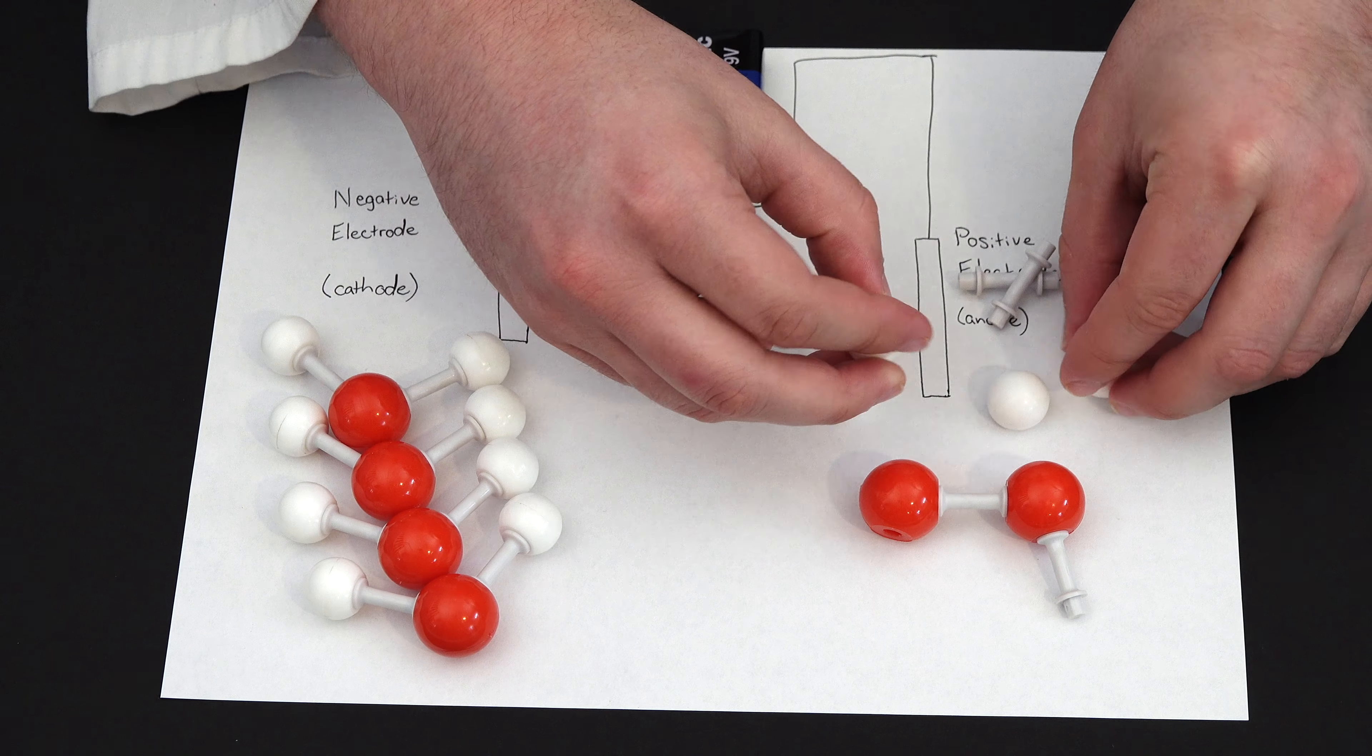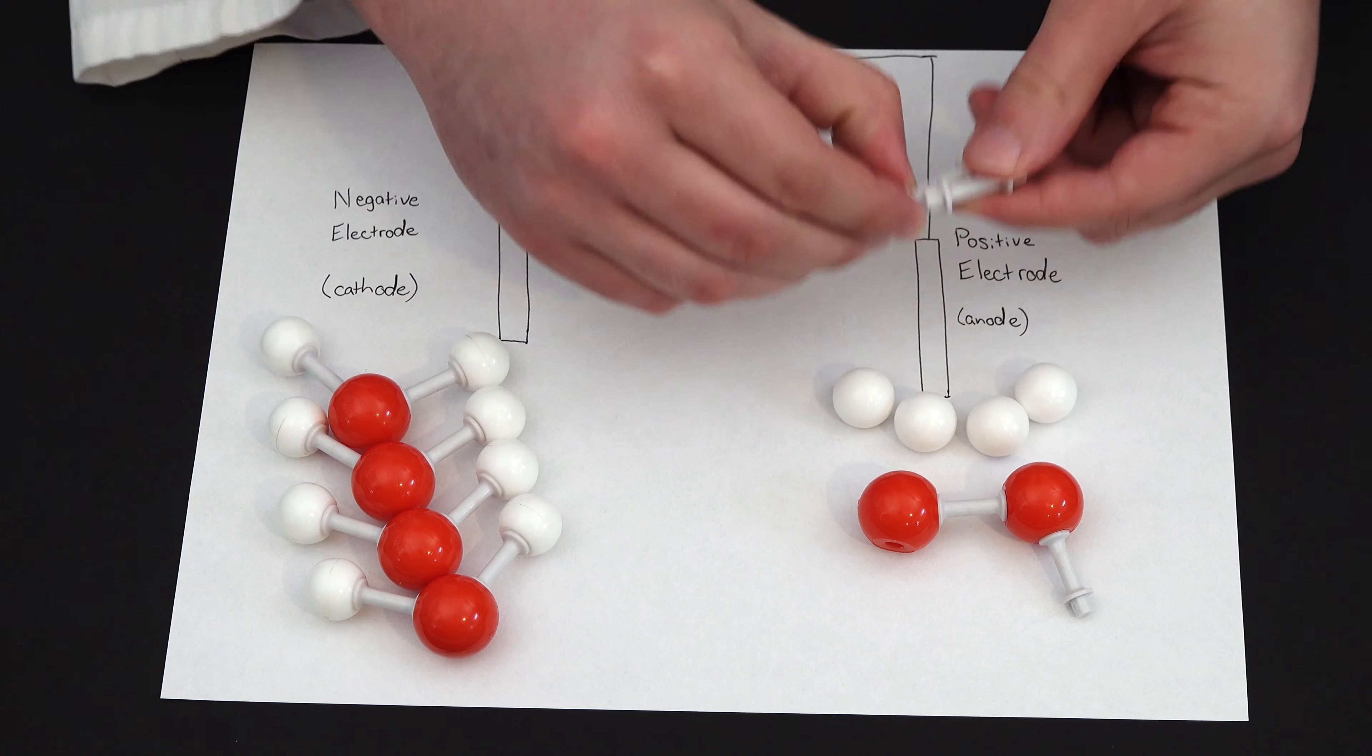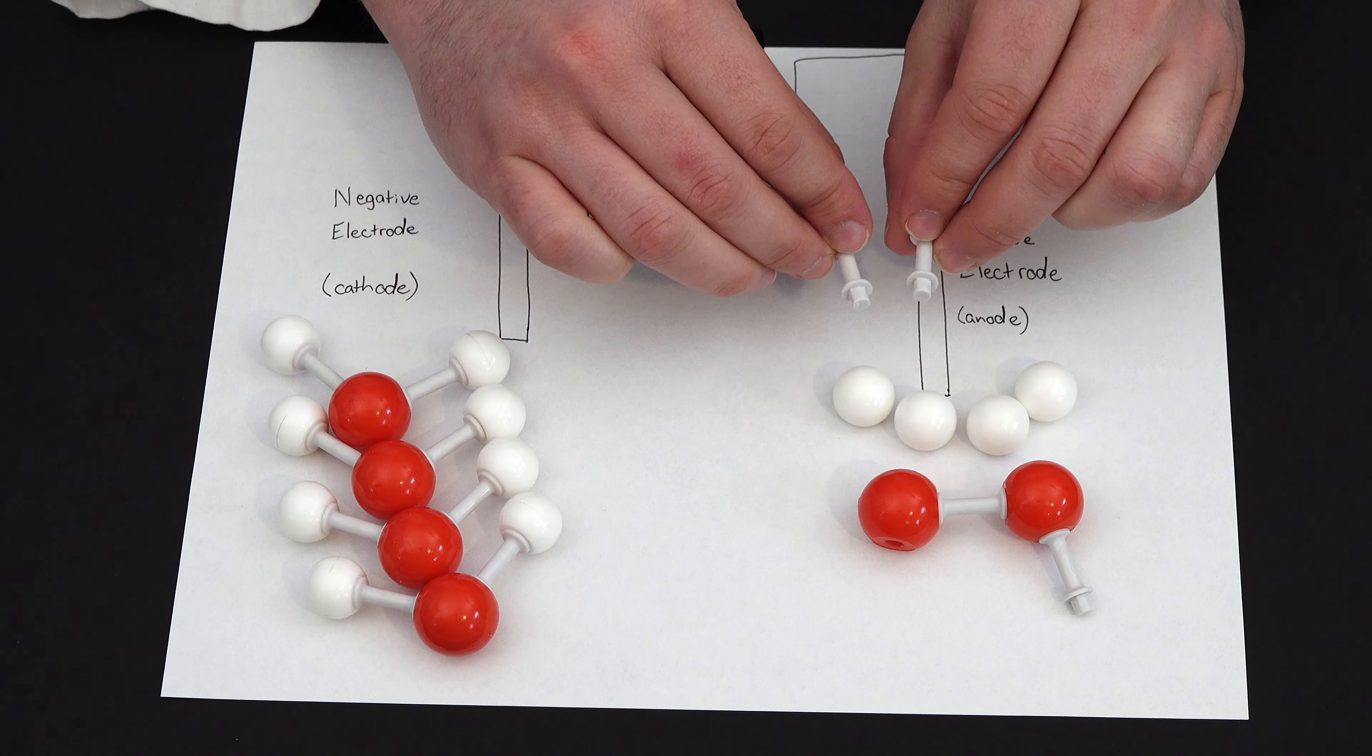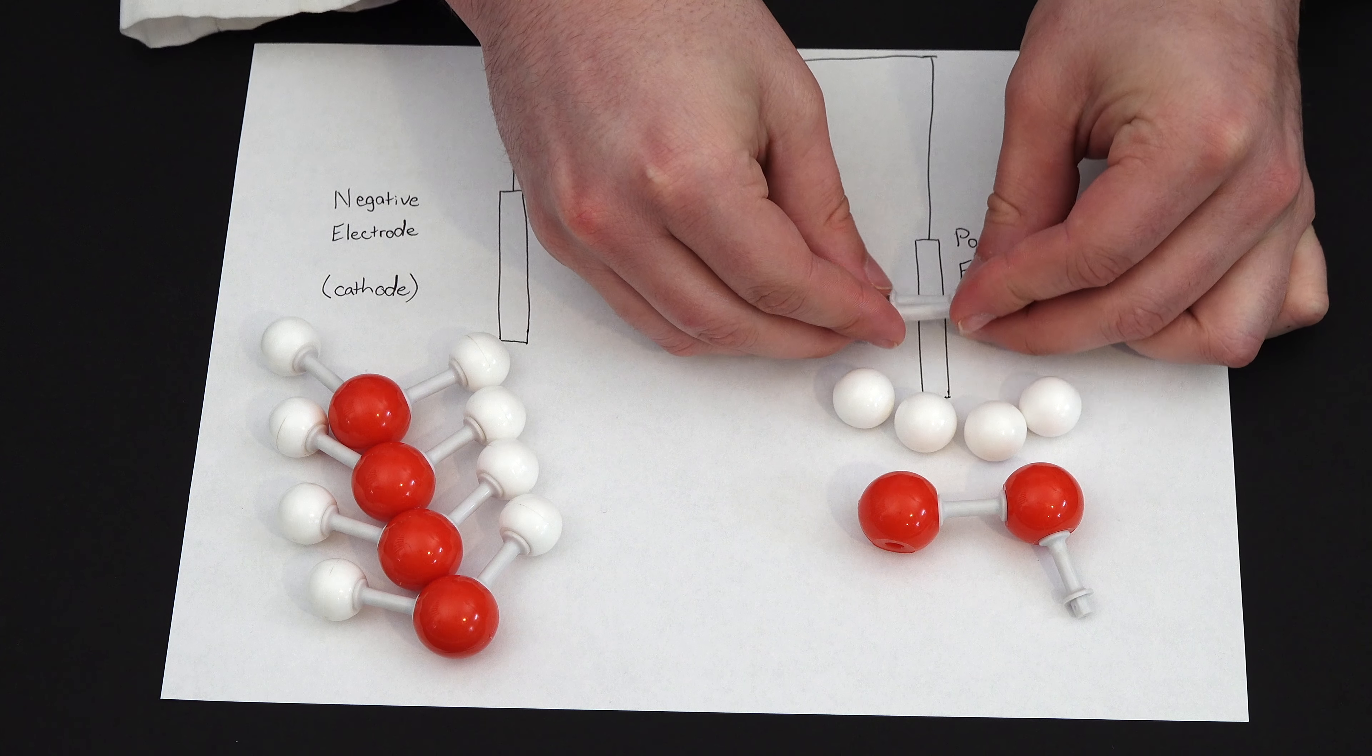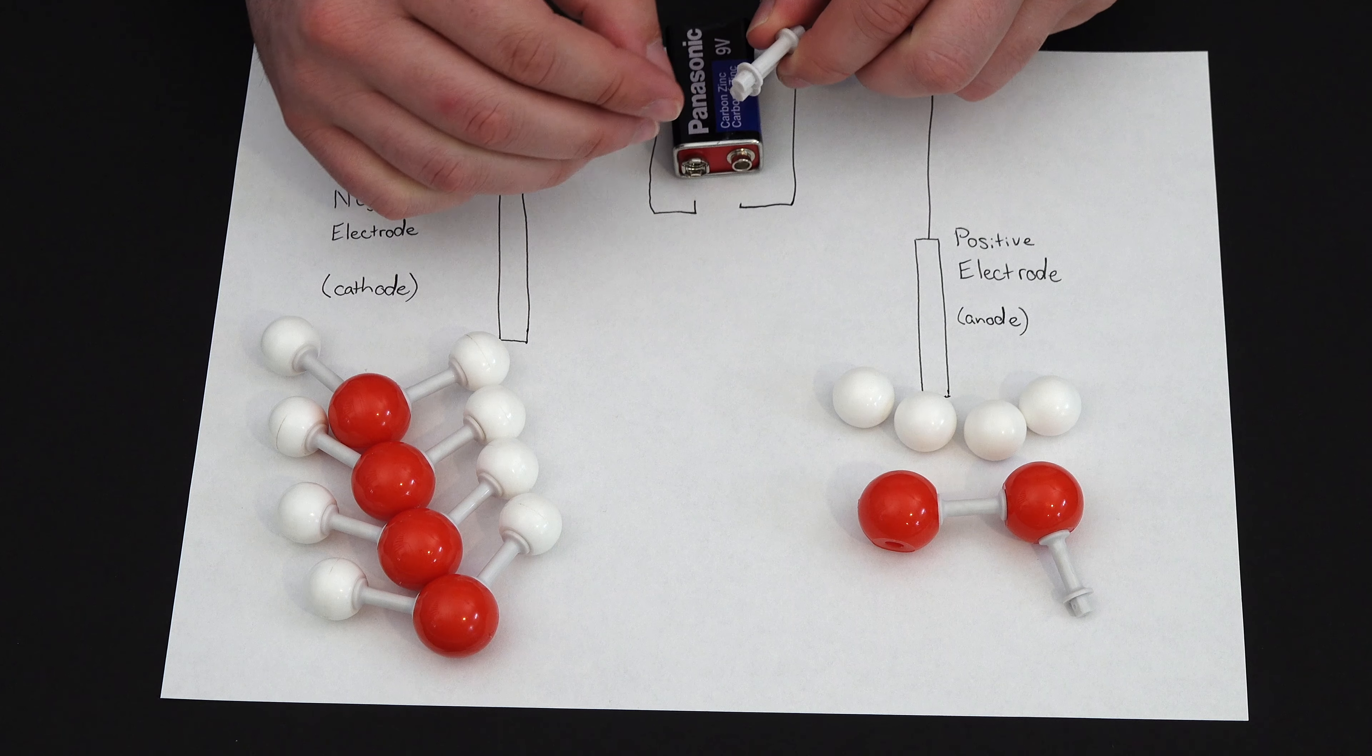And we have our four hydrogen ions, because they no longer have their electrons, and four electrons, represented here as these two pairs of electrons. So these four electrons move up the wire, and into the positive terminal of the battery.